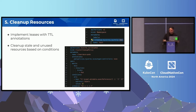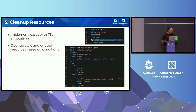Finally, with Kyverno you can also delete or clean up resources. Through policy-based automation, you can set TTLs — leases for different namespaces, leases for different resources within your clusters, any expensive resources. This allows you to clean up resources over time. If you need more complex conditions, you can also do this easily with Kyverno.